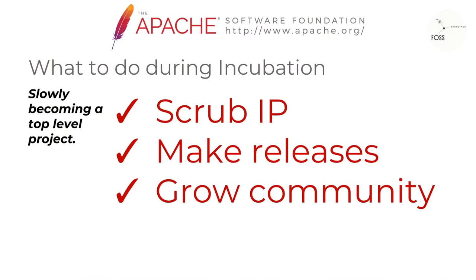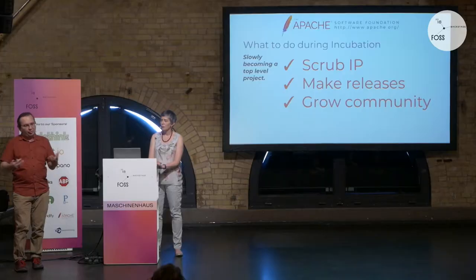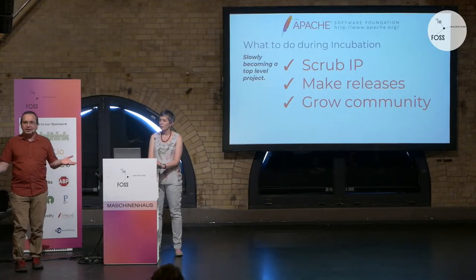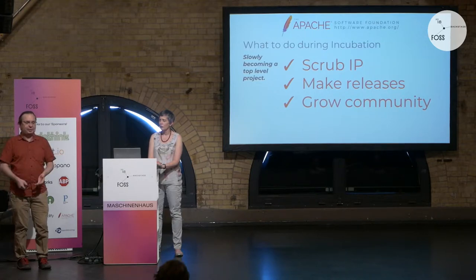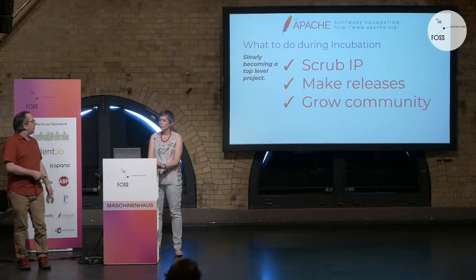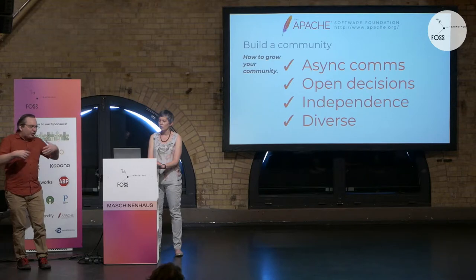If a project comes to the incubator with an existing community and large code base, that software needs to come in via a software grant — saying here is all this code we're donating, the ASF now owns the IP. Then you need to look through all the code and double-check that everything is correct. Quite often it's not. Someone may have copied some code from somewhere — for example, I once voted minus-one on a release because it had a picture of a cat done by a professional photographer who owned the copyright. You have to check that everything is correct as far as IP goes.